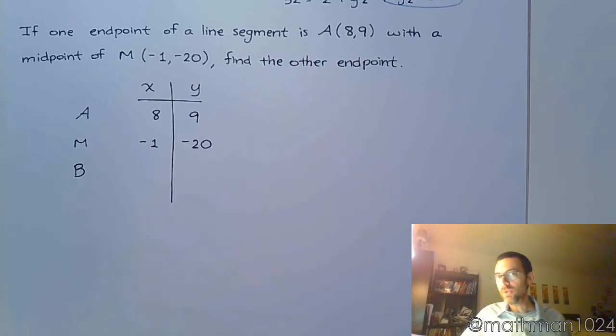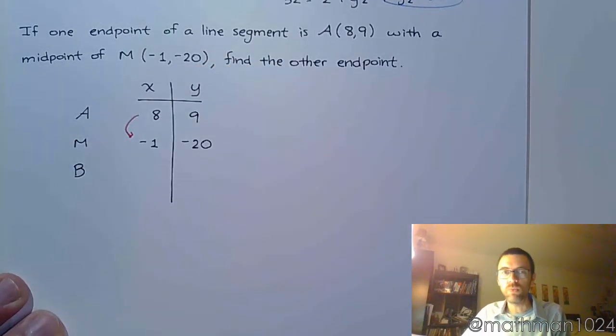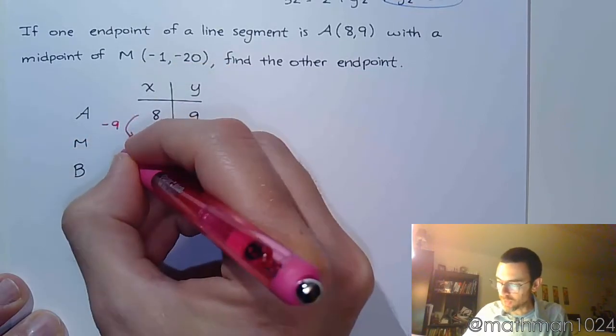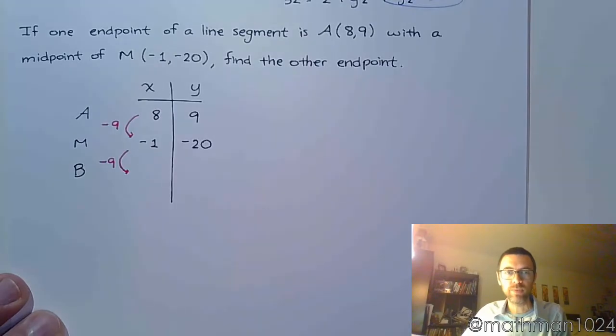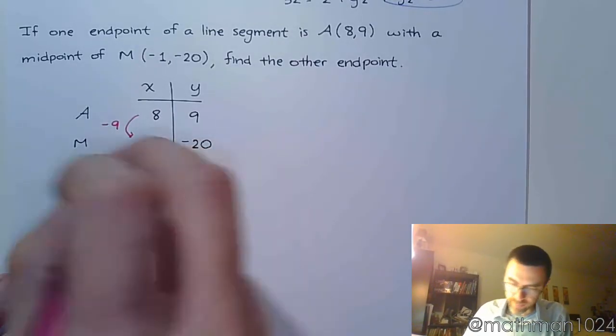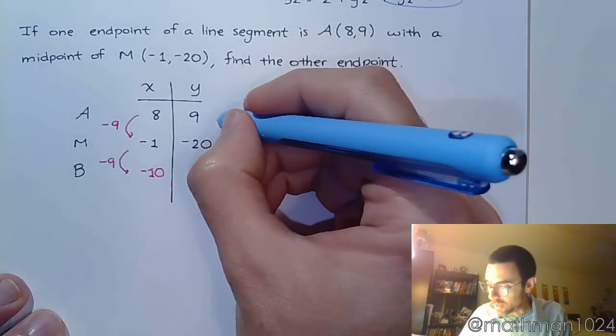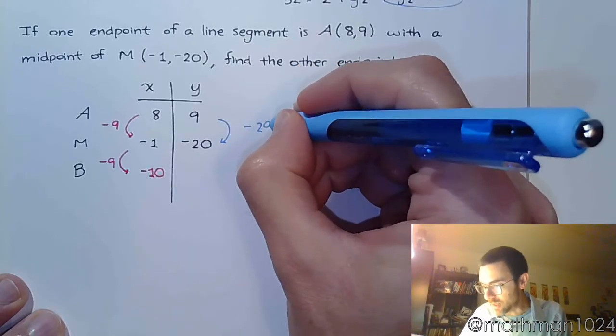So I'm going to use the trick that I was using above. To go from 8 to negative 1 is a difference of 9, but you're going down 9. So I'm going to do that again to get to the other endpoint. So negative 1 minus 9 is negative 10. And we do something similar for the y. From 9 to negative 20, you've actually gone down 29.